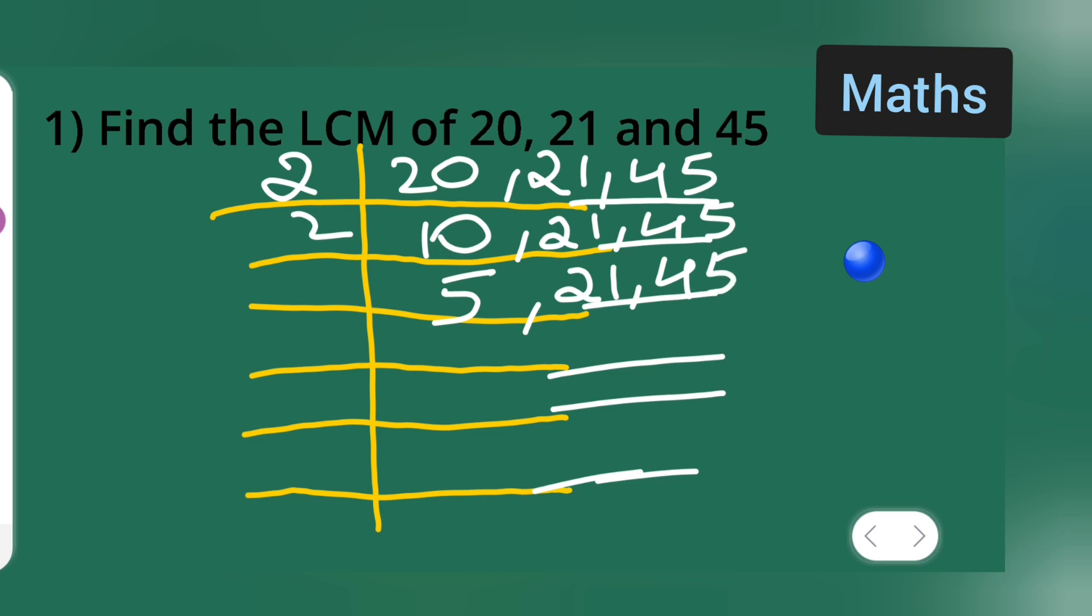Next is 5. 5 ones are 5. 21 and 45. 5, 9s are. Next is 3.